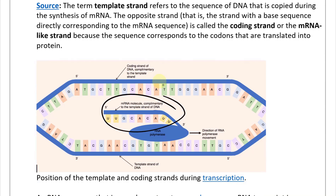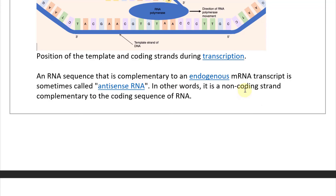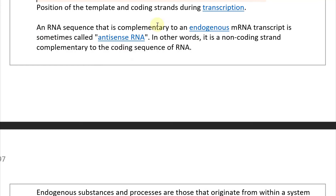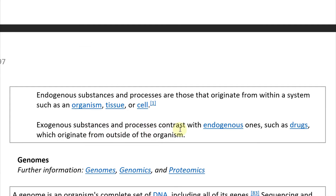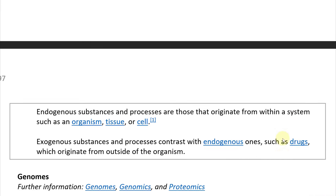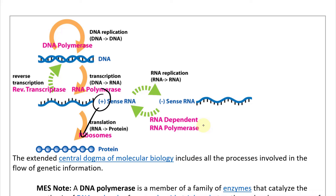So the RNA polymerase uses the template strand to create RNA matching the coding/sense strand — it doesn't matter for this definition whether it goes to a protein or non-coding RNA. For RNA, the definition is simpler: positive sense RNA can go to protein, and negative (antisense) RNA cannot go directly to protein. An antisense RNA is a non-coding strand complementary to the coding sequence of RNA. Endogenous substances originate from within a system such as an organism or cell, while exogenous substances — like drugs — originate from outside the organism.